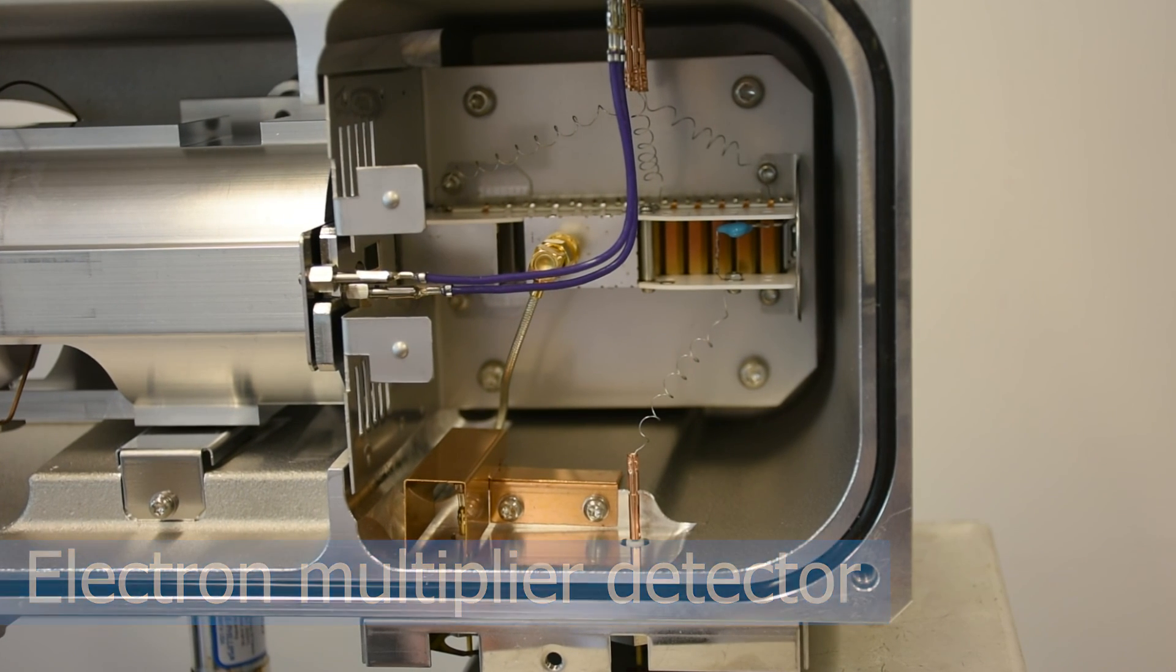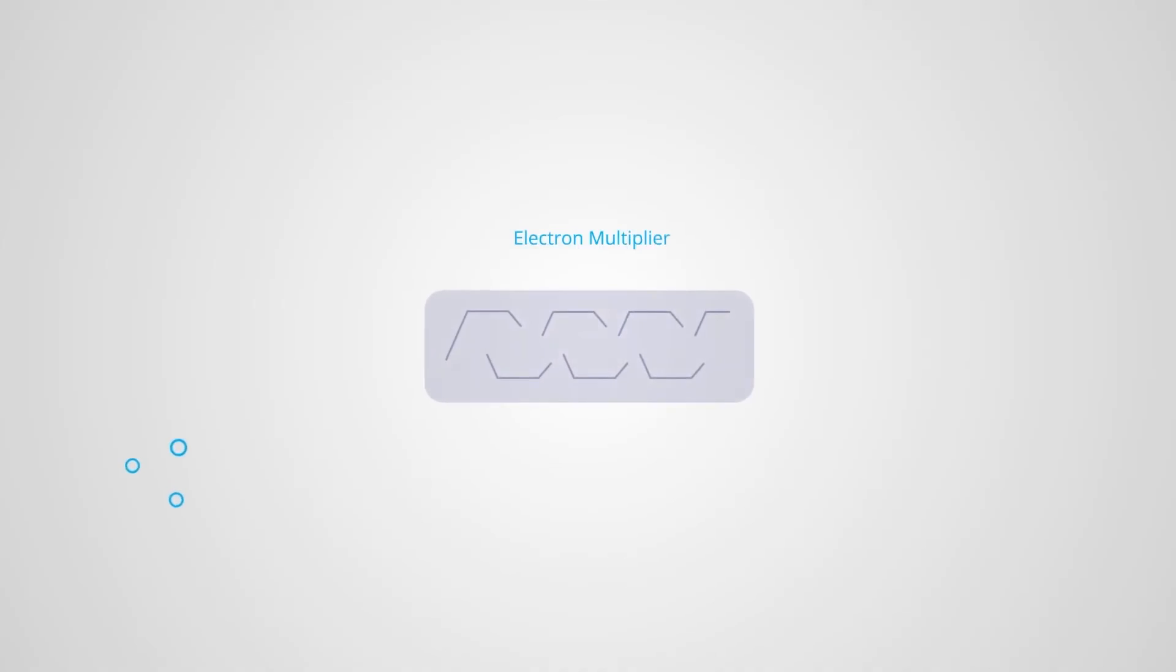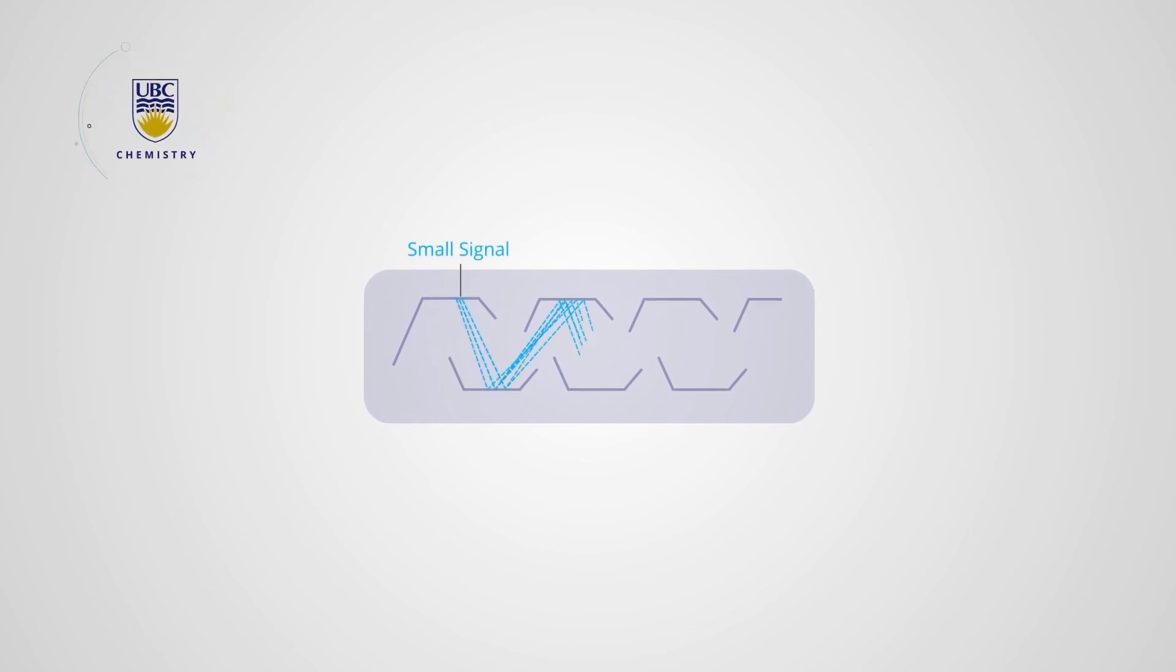The detector is an electron multiplier. Ions entering it strike a cathode, which causes multiple electrons to be emitted. These are accelerated into another electrode, ejecting even more electrons. This process repeats several times until the now large flow of electrons reaches the anode, where the current is measured. The signal is converted to digital form, which goes to the computer.